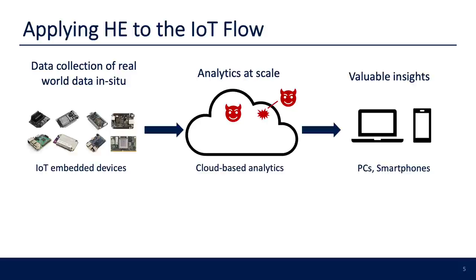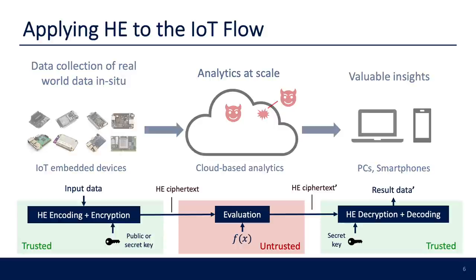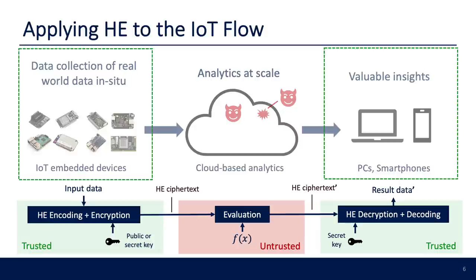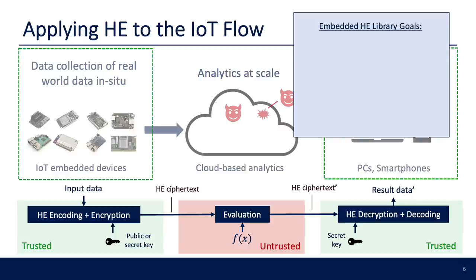Coming back to the IoT deployment flow, we can apply HE by performing encoding and encryption on the embedded devices, having evaluation performed in the untrusted cloud, and then when a user needs a result, they simply decrypt and decode the result from the cloud. Using HE, we only need to trust the user endpoints in this flow. This is where SEAL Embedded comes in to enable this HE flow in IoT deployments.